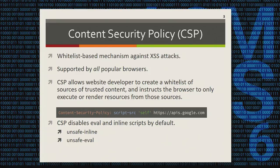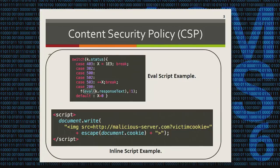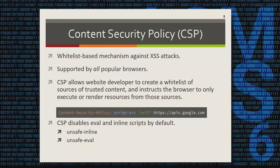By default, CSP disables eval and inline scripts. The script at the top is an example of an eval script, which can interpret a string as JavaScript code. The one at the bottom is an example of an inline script, which embeds JavaScript code directly inside the script tag. These JavaScript usages are insecure, so CSP blocks them by default.